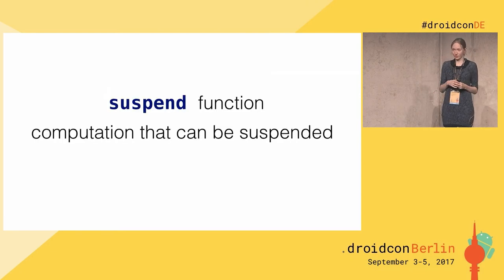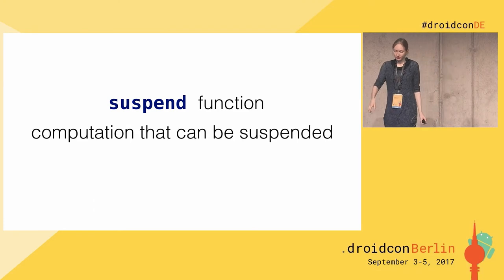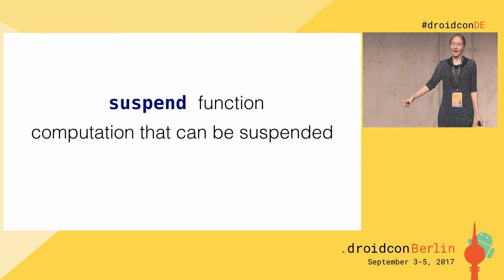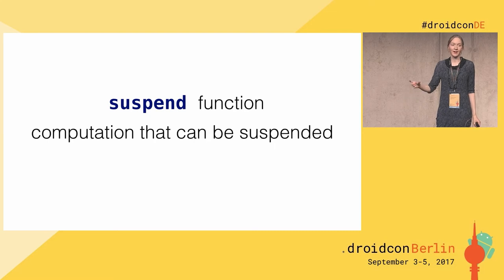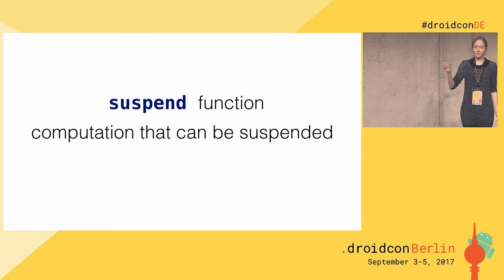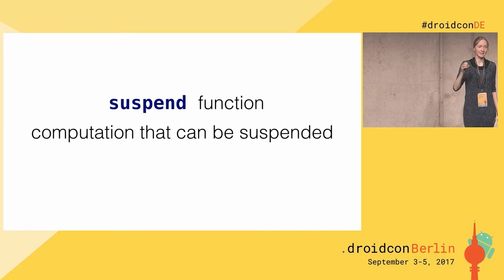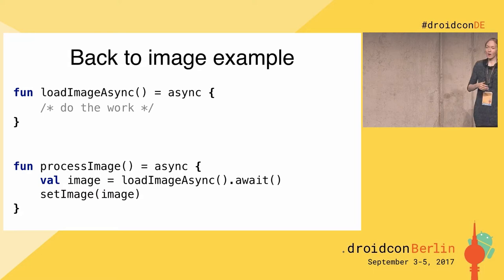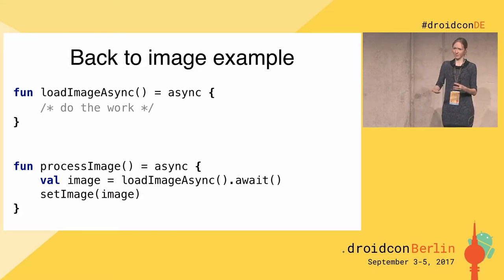Now let's look at some code. In Kotlin, with the support of coroutines, comes the support of the `suspend` keyword. You can mark functions as `suspend`, which means that this function represents a computation that can be suspended — a computation that can be put away somehow. Let's go back to our image example and see how it works in terms of suspended computations.